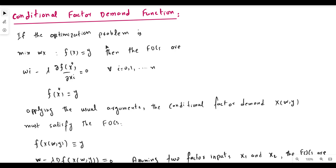We apply the first-order and second-order conditions to minimize total cost. Developing a Lagrangian function, the first-order conditions can be reported by these equations. This shows a vector of equations with the derivative of the Lagrangian function with respect to all factor inputs x_i, and also the derivative with respect to lambda.